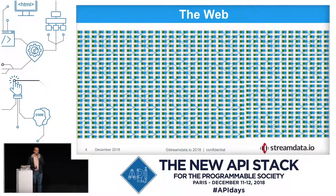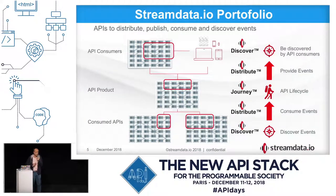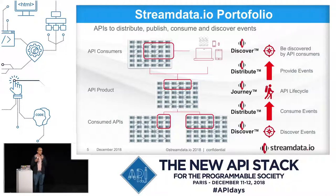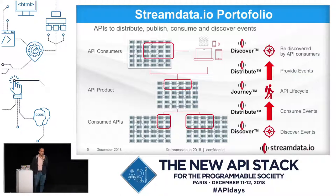I'm going to present a little bit what we do at StreamData. Following the North, South, East, West convention, what we do is help people consume APIs and turn those APIs into events when they consume them with our distributed product. We help people discover third-party APIs with our Discover service. Within the product we have a Journey service, which is our workshops for large accounts. And for API products, we help companies augment their API with an event-driven API and help them be discovered.